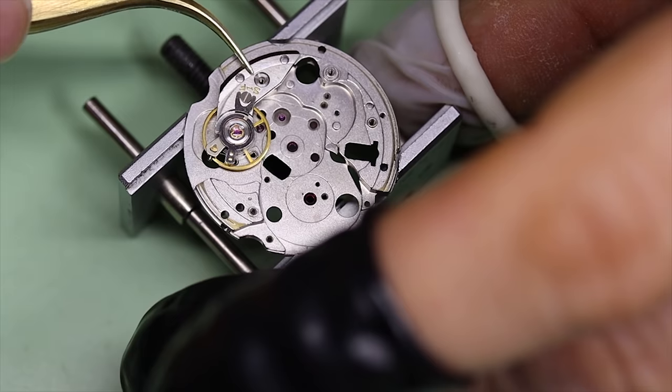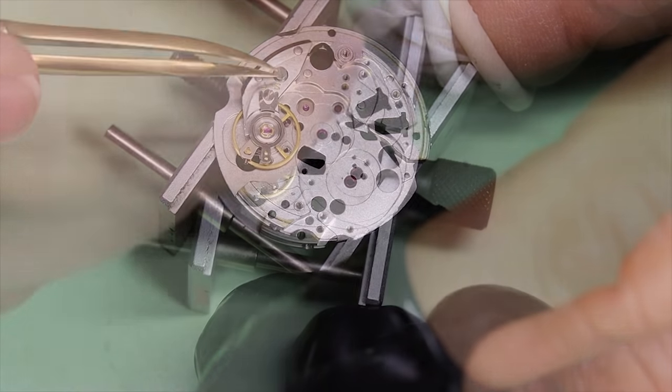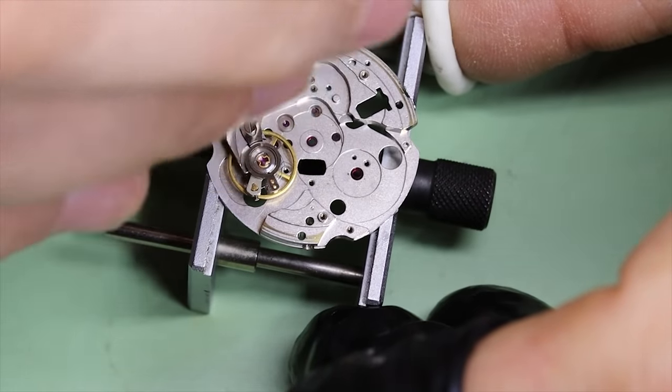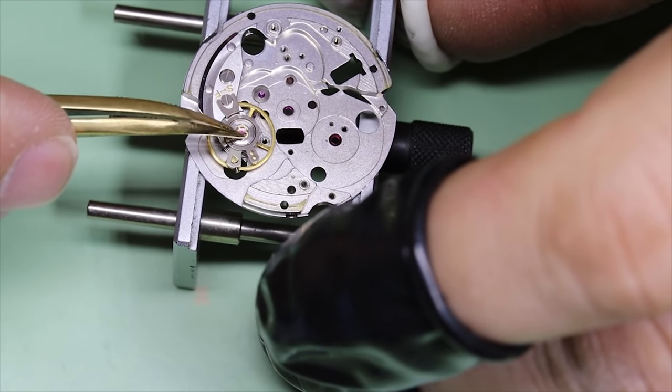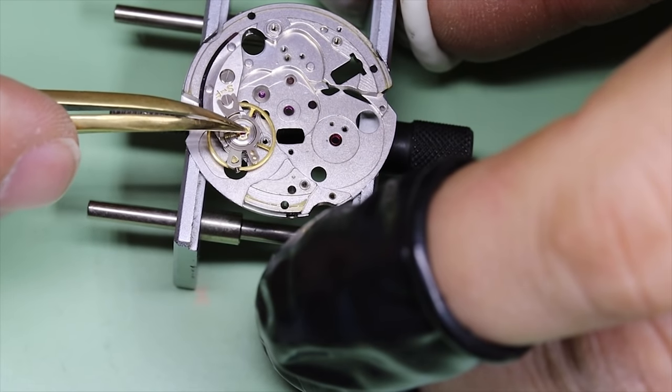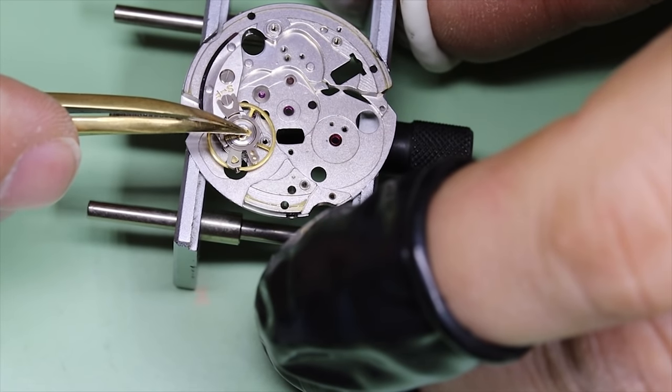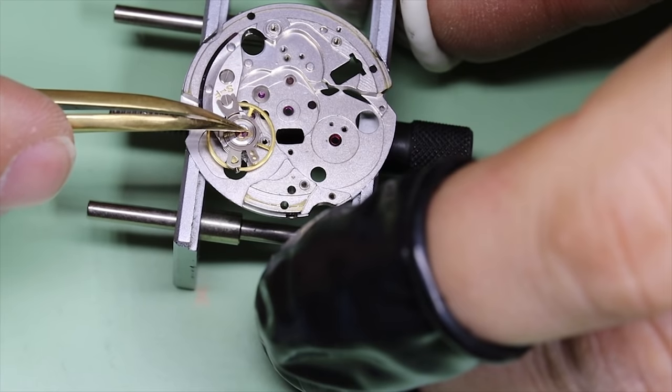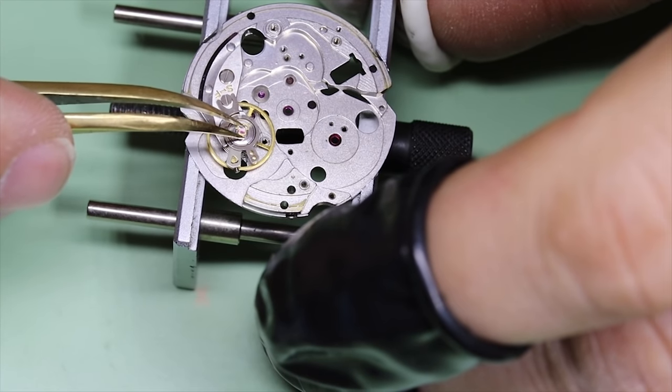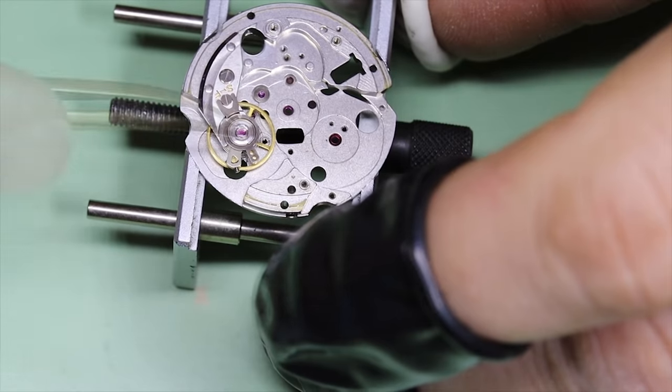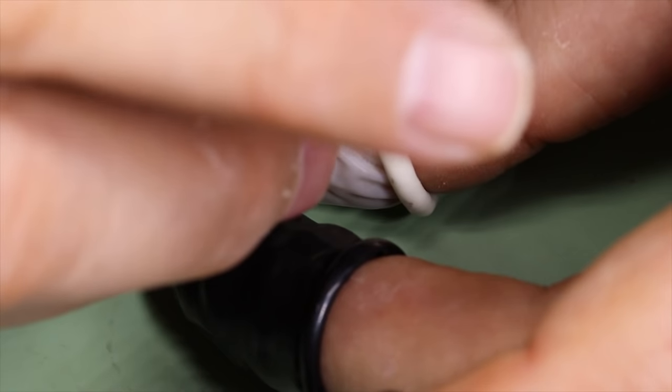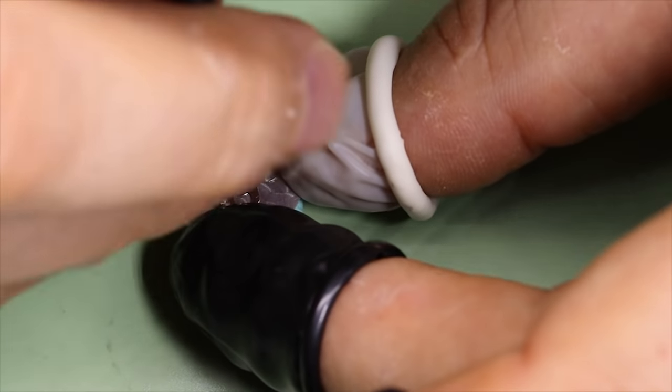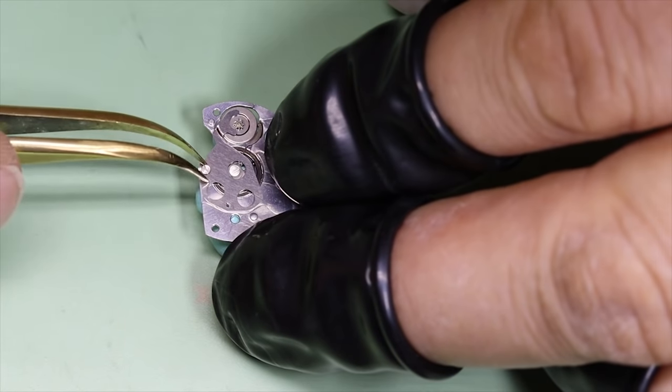So it should be clear that high beat rate isn't the end all for movements. For the Swiss lever escapement it does provide accuracy benefits, but there are some pretty major drawbacks as well, chief among them being that there is much more wear in the movement. Case in point here could be Longines Ultrachron, which was introduced with a 36,000 bph movement initially, but which switched to a 28,800 movement just a few years later due to wear.